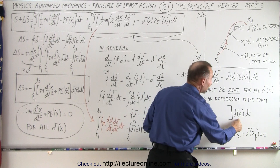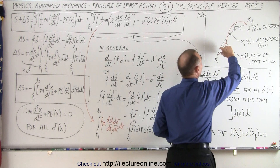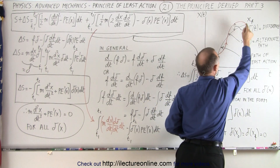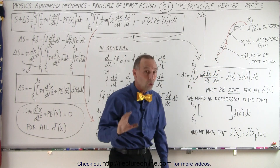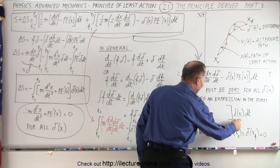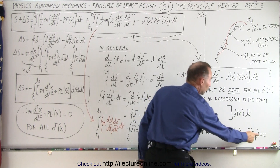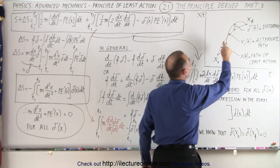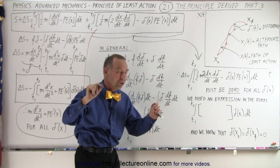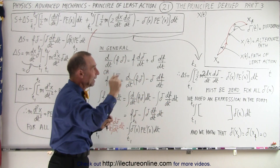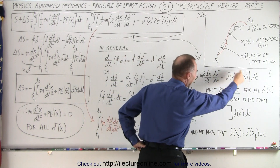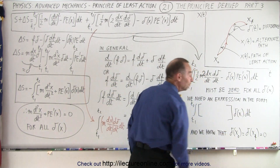This function here represents the difference between the two paths from our initial point to our final point. We also know that that function, delta X, is equal to zero at the initial point and at the final point, because the two paths must come together at the start and at the finish. So somehow, we need to take this and write it in that form.